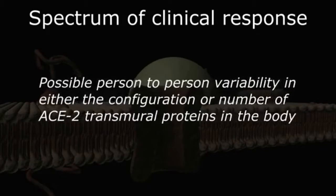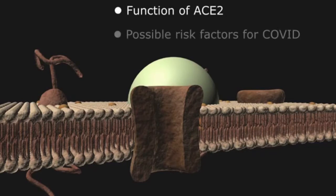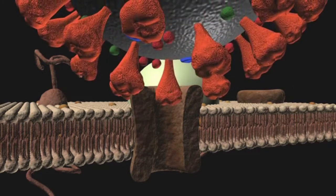Over the next few minutes, we are going to look at the actual function of the ACE2 metalloprotein in our bodies and explore some of the clinical situations that may make the protein a more suitable target for COVID. To understand the function of ACE2, we first have to review the renin-angiotensin system.